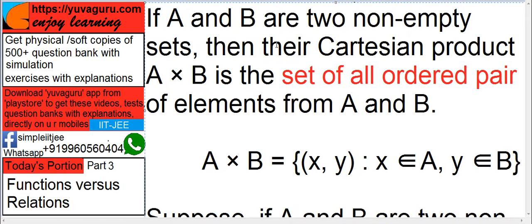If A and B are two non-empty sets, then the Cartesian product A cross B is a set of all ordered pairs of elements from A and B. Now, this is represented as A cross B equals to (x, y) where x belongs to A and y belongs to B.